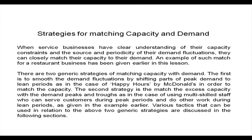When service businesses have a clear understanding of their capacity constraints and the source and periodicity of their demand fluctuations, they can closely match their capacity to their demand. There are two generic strategies for matching capacity with demand. The first is to smooth the demand fluctuations by shifting parts of peak demand to lean periods, as in the case of happy hours by McDonald's. The second strategy is to match excess capacity with demand peaks, as in the case of multi-skilled staff who serve customers during peak periods and do other work during lean periods.